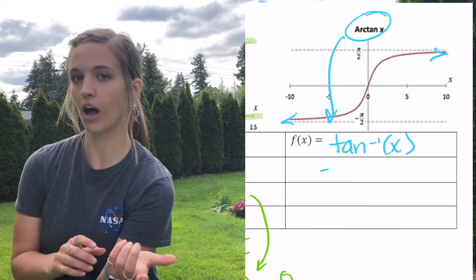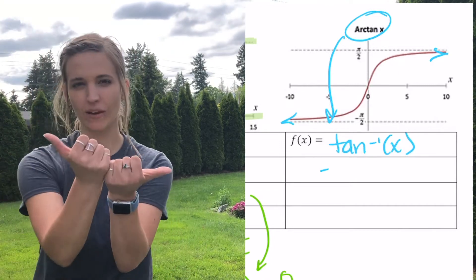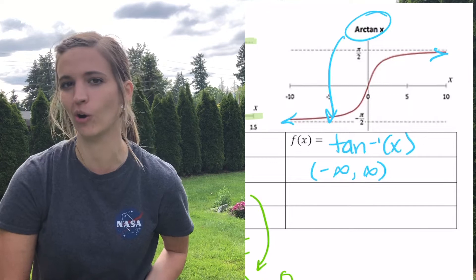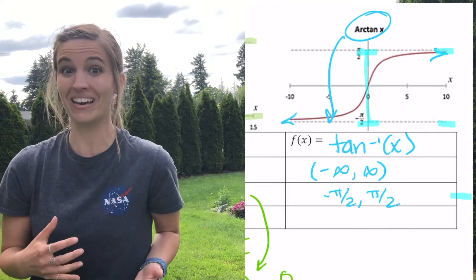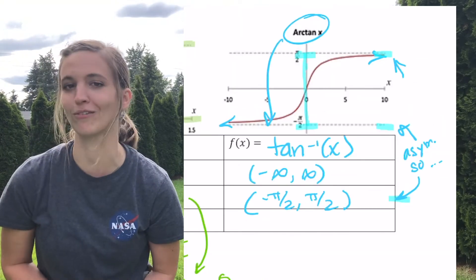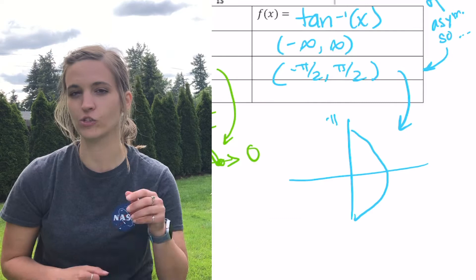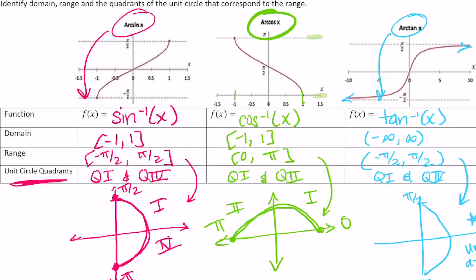So if we imagine that tangent graph flipped over the y equals x line — so that it's the inverse — the domain would be negative infinity to positive infinity because we have a continuous graph; we can draw arrows on the ends to see it keeps going forever in the x direction. The range, though, looks like it's trapped between negative pi over 2 and pi over 2. We don't include those pi over 2's because there are asymptotes there, so the range is negative pi over 2 to pi over 2, not inclusive. For arc tangent, just like arc sine, we're in quadrants 1 and 4. So: arc sine — quadrants 1 and 4; arc cosine — quadrants 1 and 2; arc tangent — quadrants 1 and 4.